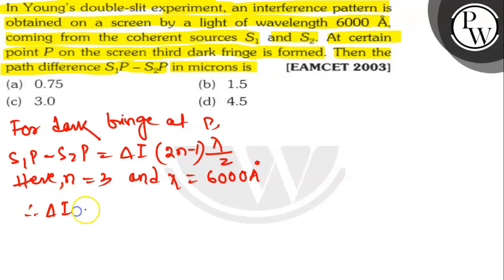Here delta I equals to 5 lambda divided by 2, it will be 5 into 6000 upon 2, it will be 15000 Angstrom, also can be written as 1.5 microns.